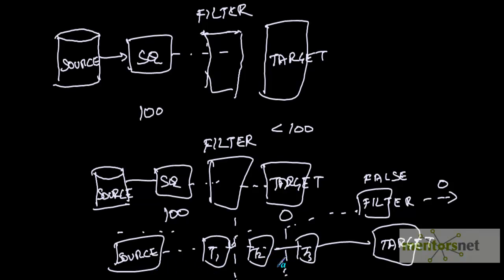You can put the filter here and see performance till here, then move it further and see performance till the next point. By moving the filter transformation with a false condition to various different places, it acts as a logical stop — no records flow out of it. By moving it to an appropriate place in your mapping, you can see the performance of part of your mapping up to wherever you want.